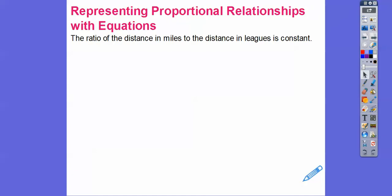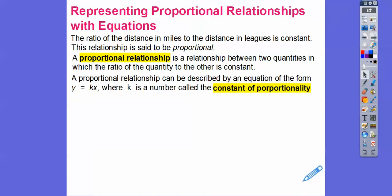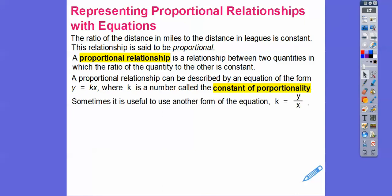When we represent proportional relationships with equations, the ratio of the distance in miles to the distance in leagues is constant. If it's constant, then that relationship is proportional. A proportional relationship is a relationship between two quantities where the ratio of one quantity to the other is always the same. A proportional relationship can be represented by the equation y = kx, where k is the constant of proportionality. k is always equal to y over x.